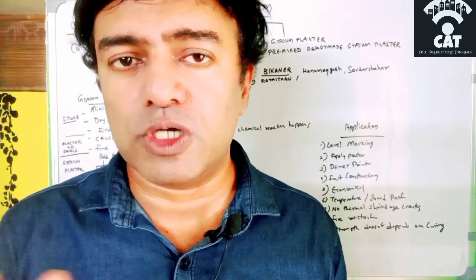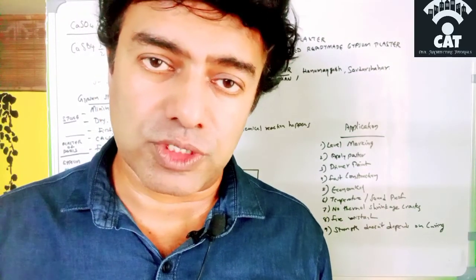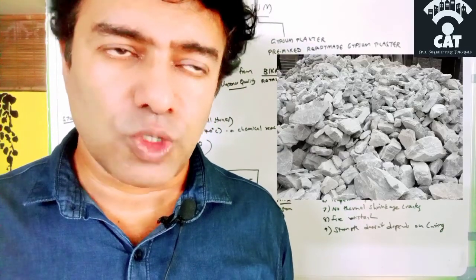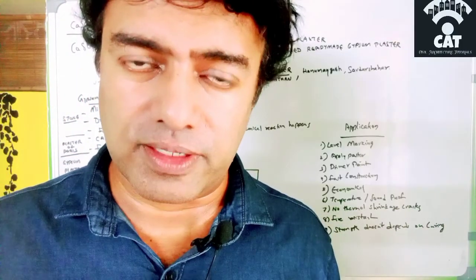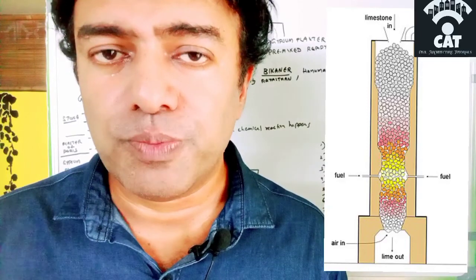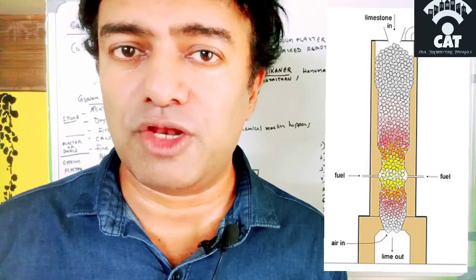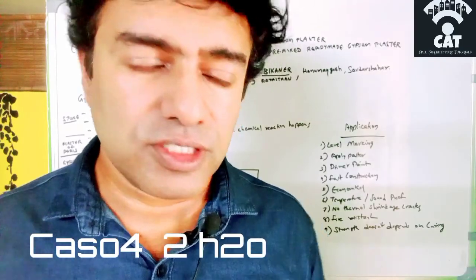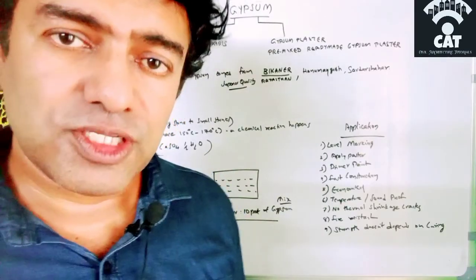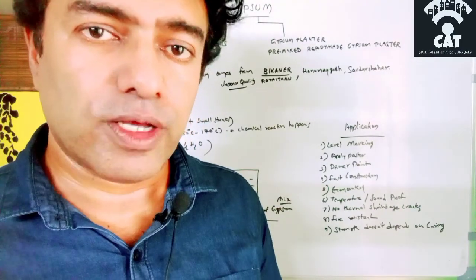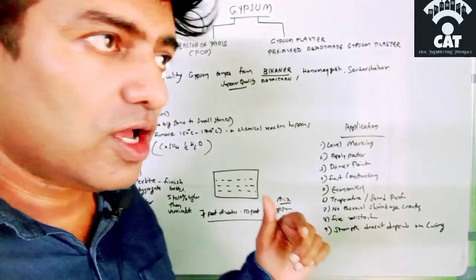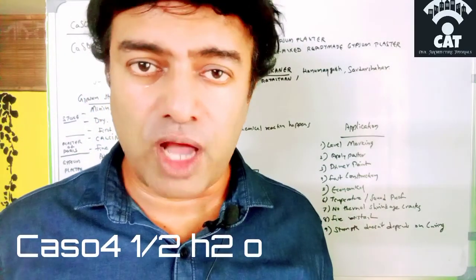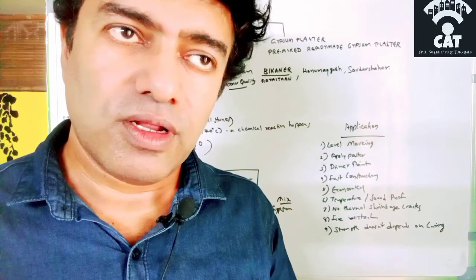After grinding into small stones, the material goes through a process called calcination, where the stones are put into a furnace and heated to 150°C to 170°C. A chemical change occurs: gypsum (CaSO4·2H2O) loses water content and is converted to CaSO4·½H2O. The product obtained after calcination is Plaster of Paris, or POP, which is used for plastering.